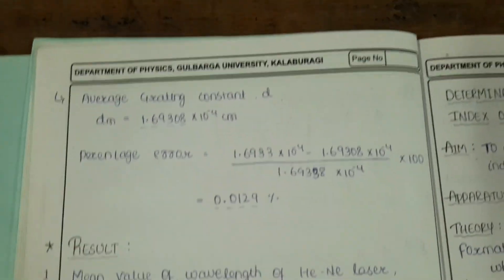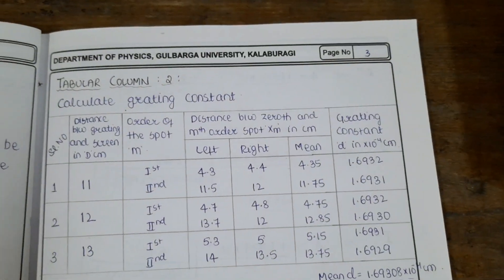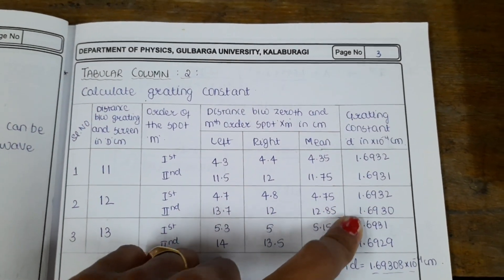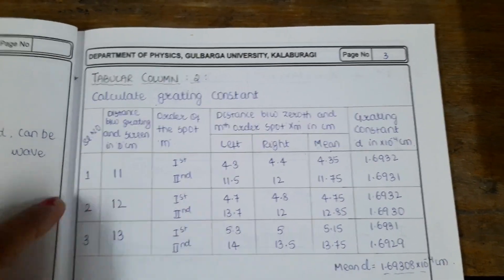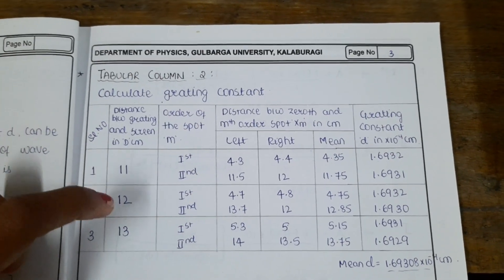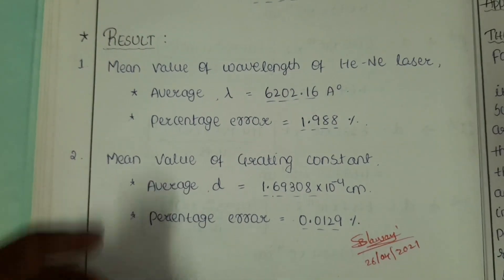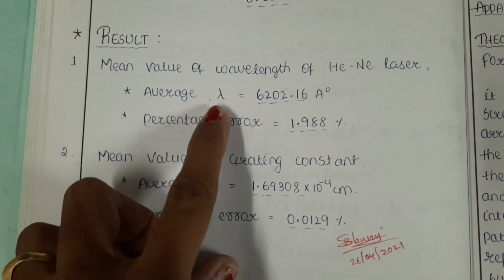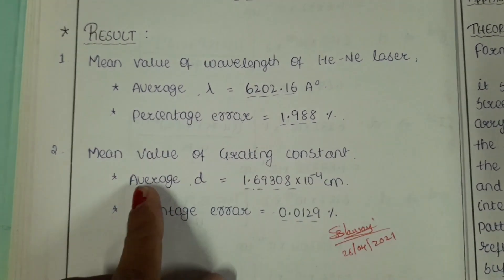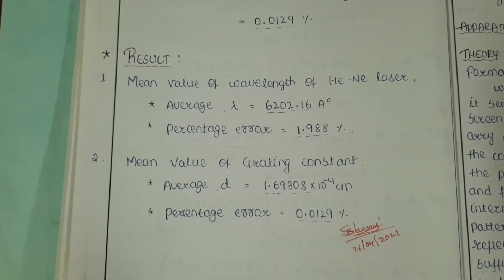Using the formula, calculate the grating constant for all three readings, then find the percentage error using: standard value minus measured value. Enter all values in the tabular column. Finally, write the results: mean value of wavelength of helium-neon laser, average percentage error, mean value of grating constant, and average percentage error. This is how you complete this experiment. Hope this video is helpful — thank you for watching.